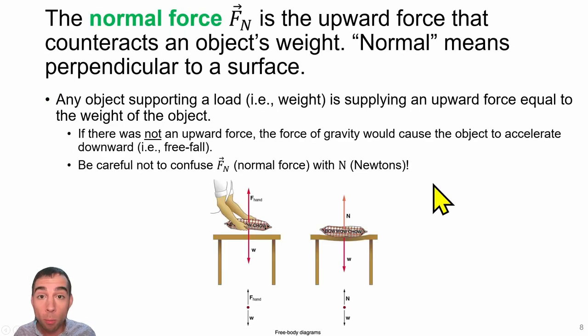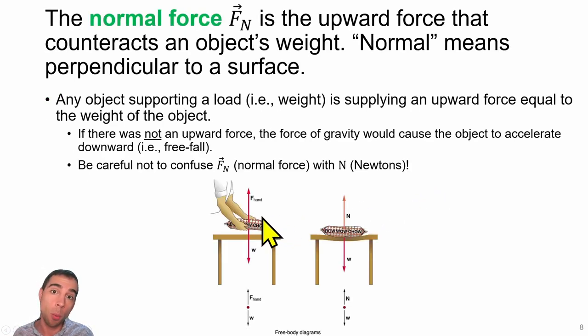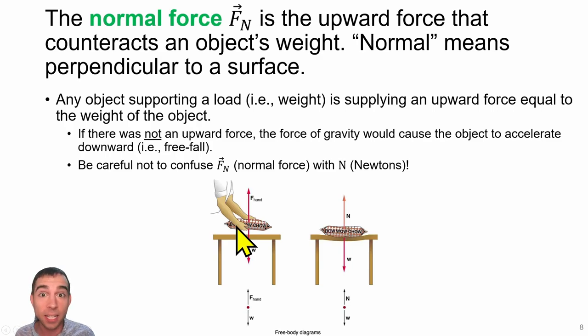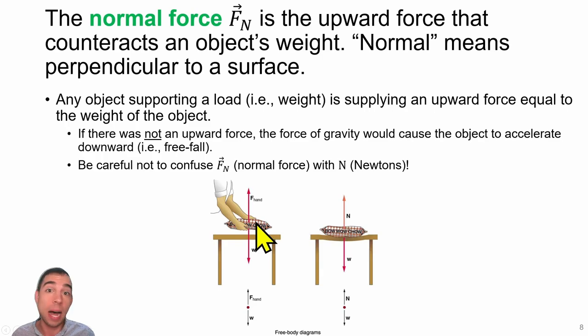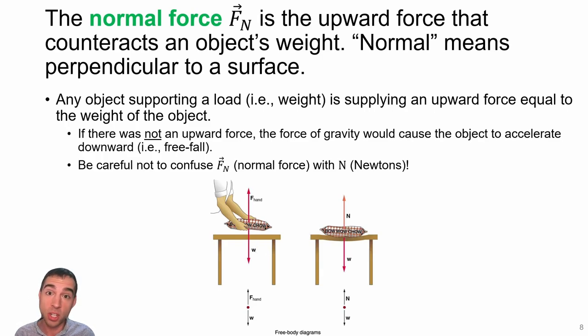A normal force is a force that points upward from a surface, or perpendicular to any surface that is in contact with another object. In this case we have some puppy chow that we're putting on a table.